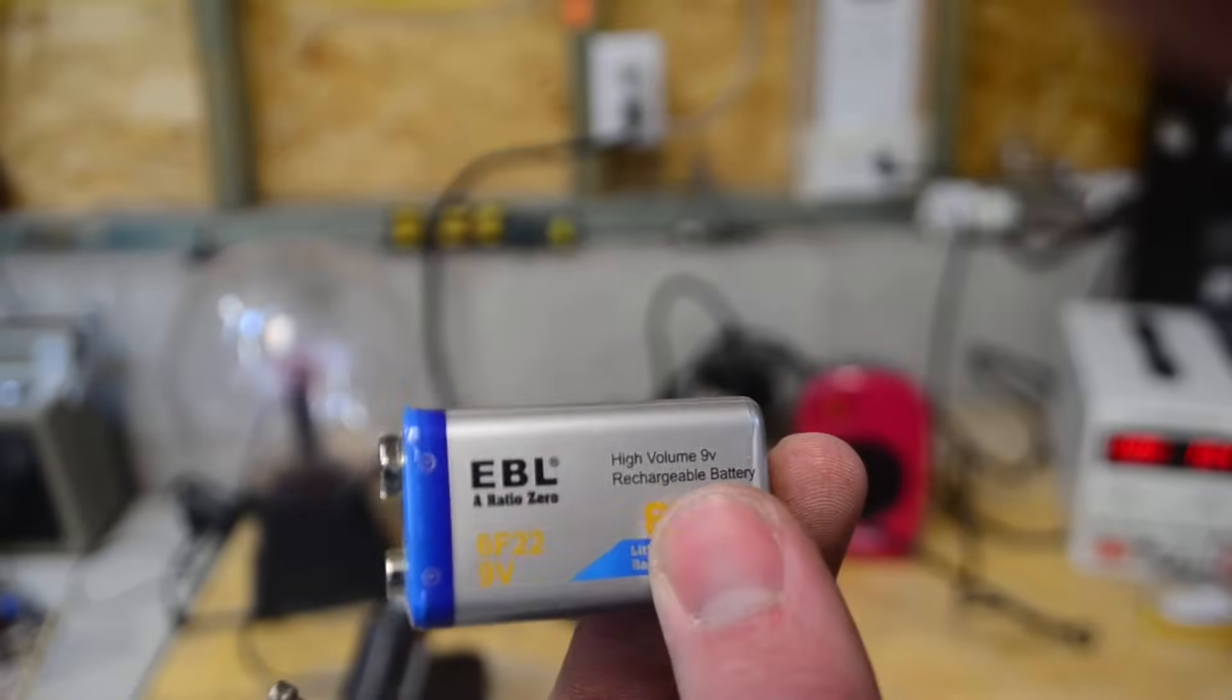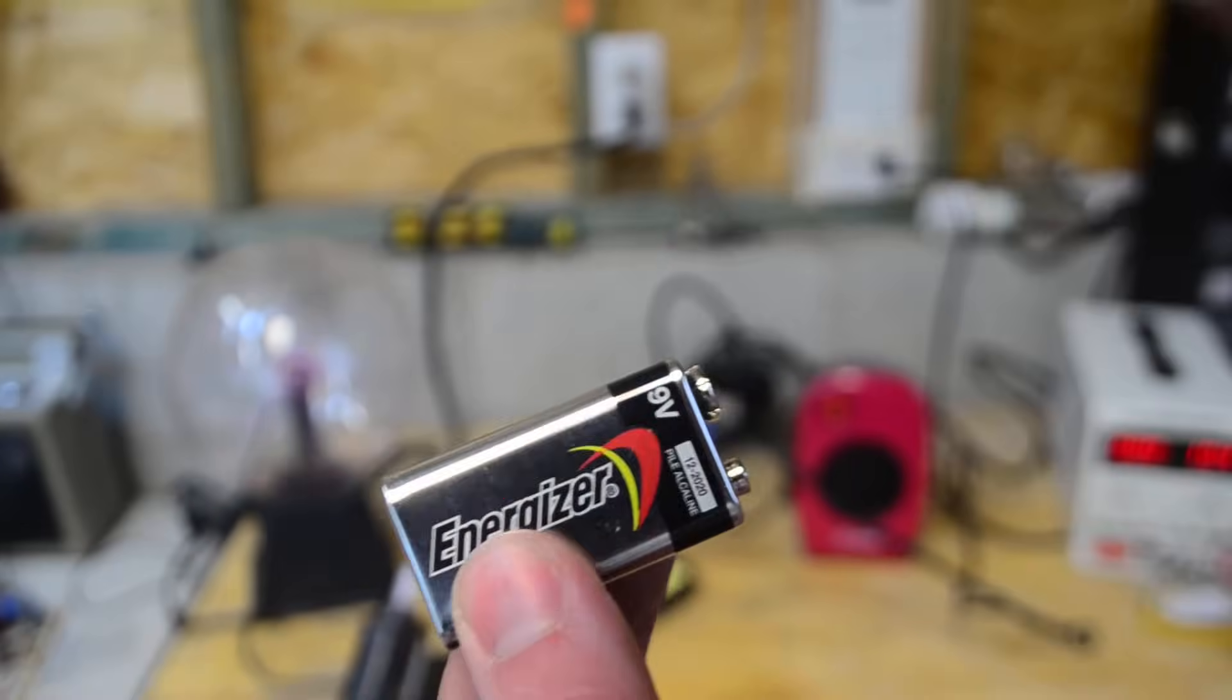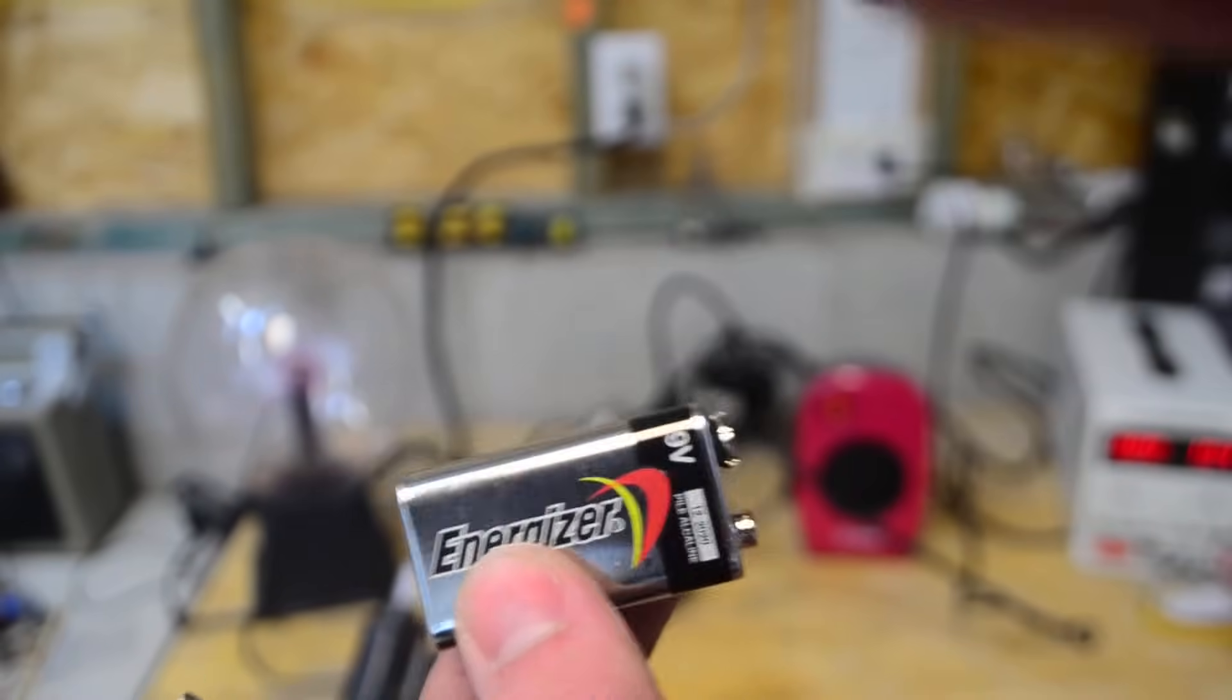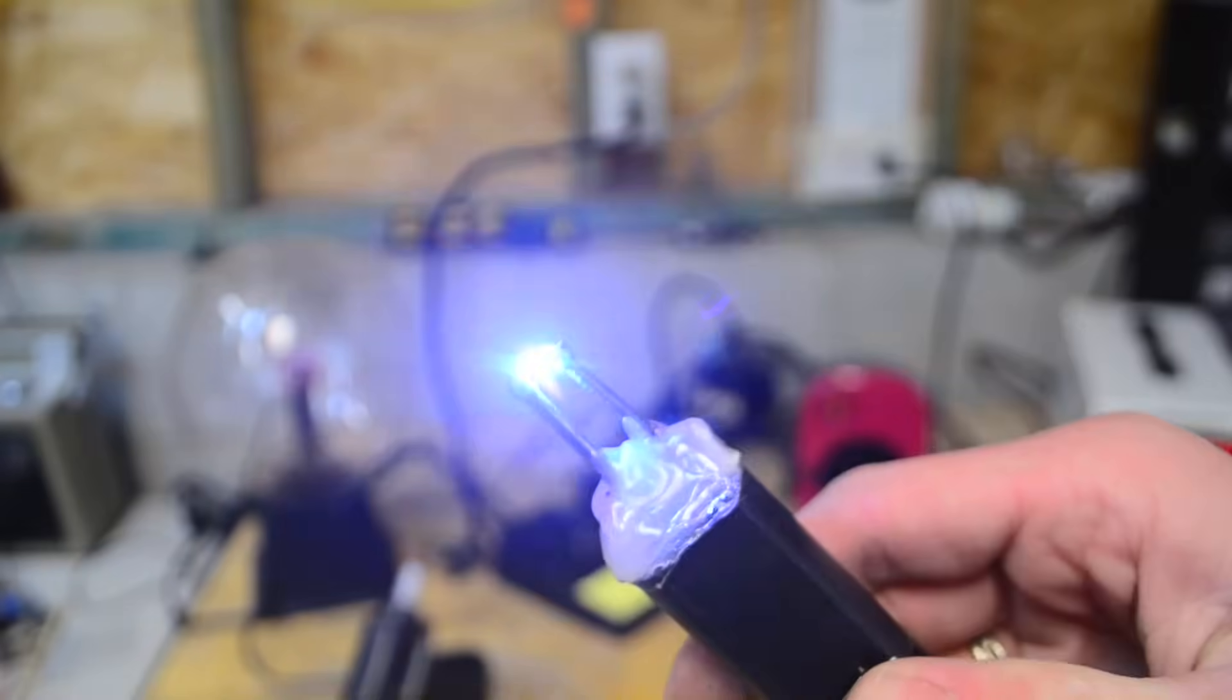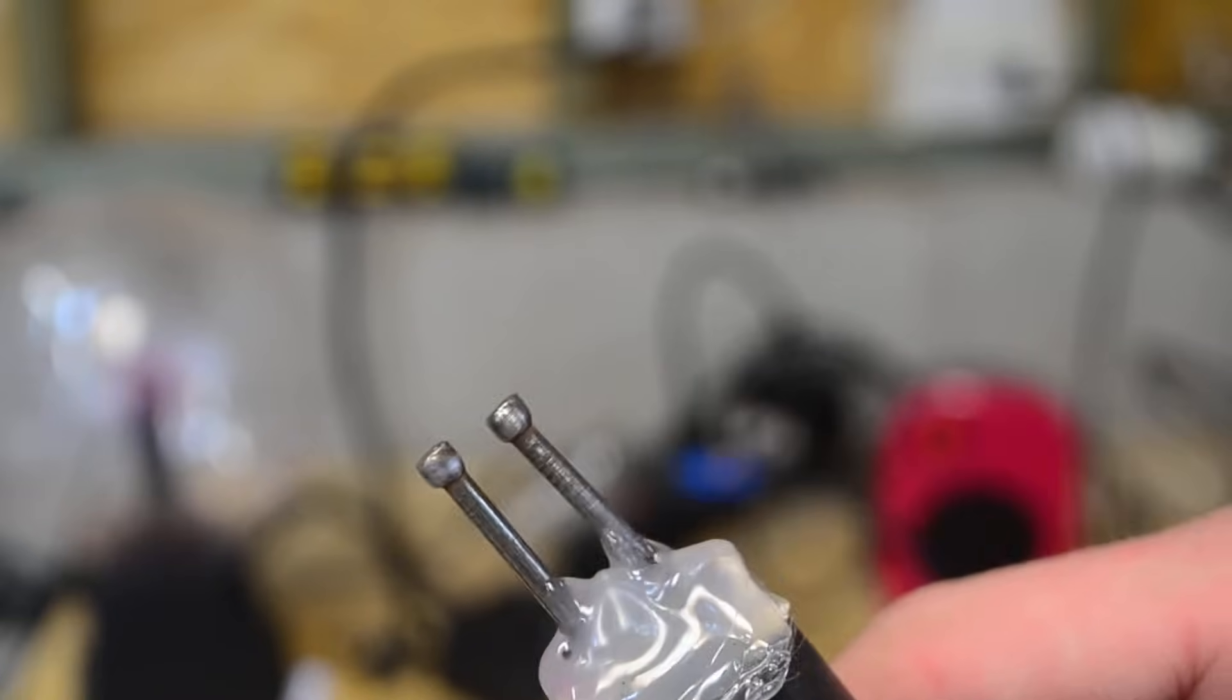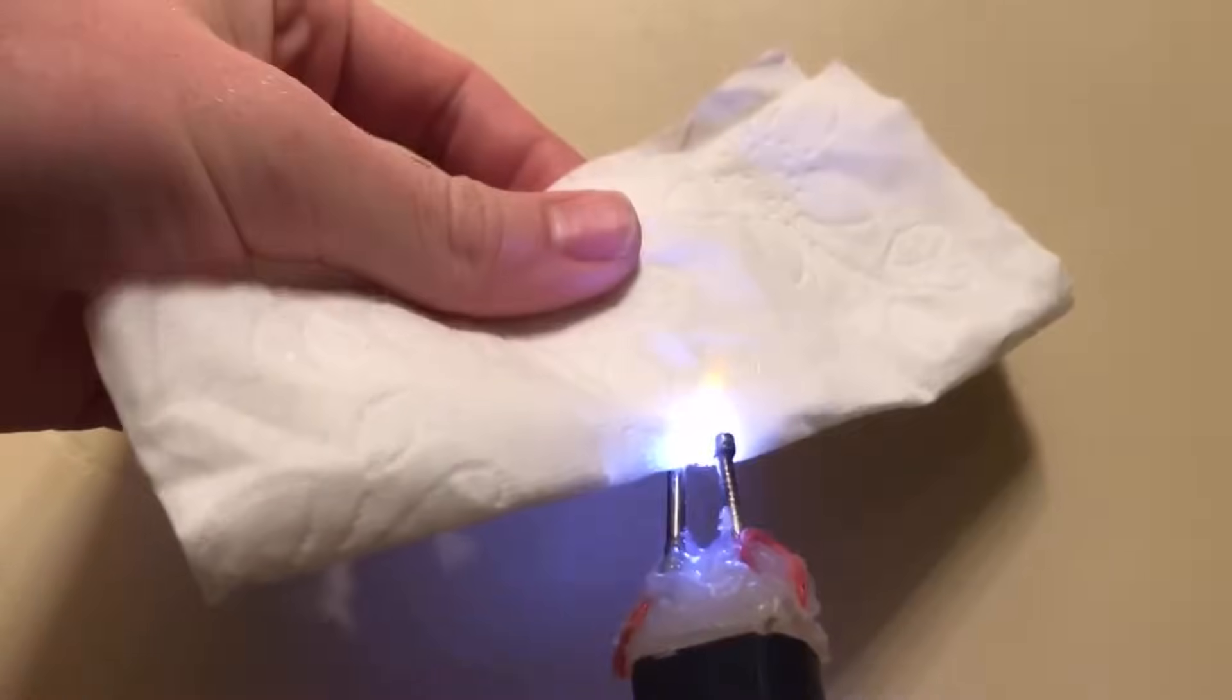Now I'm using this rechargeable 9-volt battery. It's good because it can deliver quite a bit of current. However, since I'm assuming most of you have regular 9-volt batteries, let's test this. As you can see, it's not as constant but it is still very powerful. The arc produced by this is powerful enough to ignite paper.